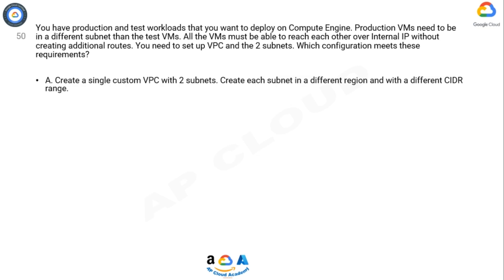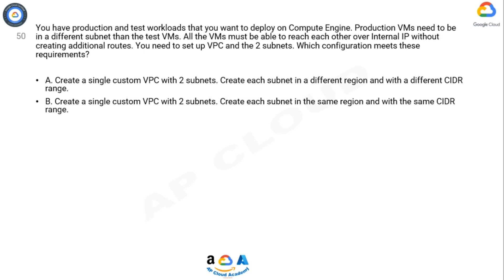Option A: Create a single custom VPC with two subnets. Create each subnet in a different region and with a different CIDR range. Option B: Create a single custom VPC with two subnets. Create each subnet in the same region and with the same CIDR range.